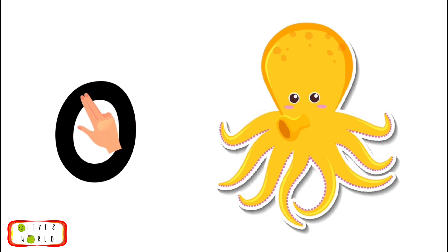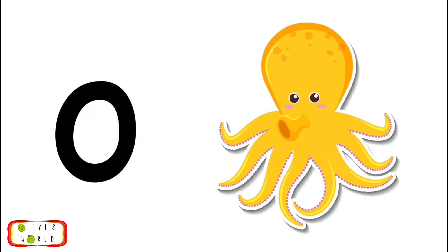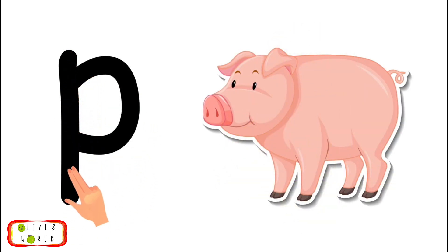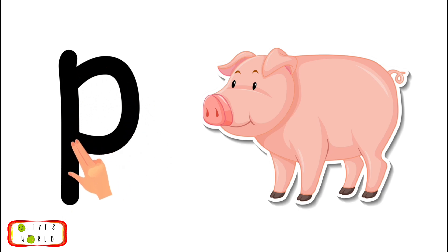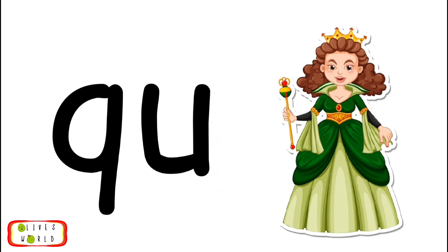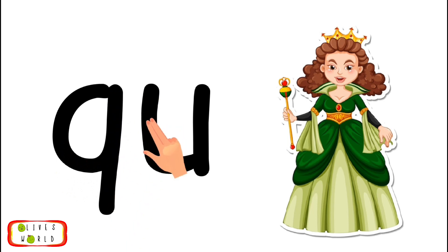O, octopus, o. Repeat O, octopus, o. P, pig, puh. Repeat P, pig, puh. Q, U, queen, kuh. Repeat Q, U, queen, kuh.